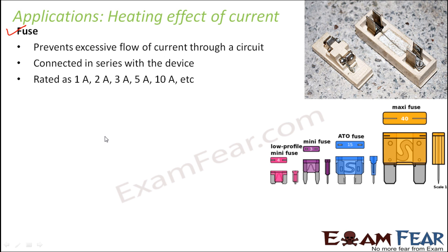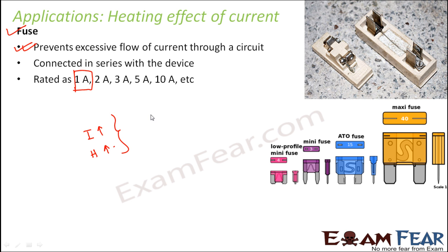How does a fuse prevent excessive flow of current? The fuse is made up of a wire which has a considerably lower melting point. As the amount of current increases, the amount of heat produced also increases as per Joule's law of heating. Since the metal of the fuse has a low melting point, as soon as the heat reaches a certain value it melts, breaking the circuit, which prevents any further flow of current. When a fuse is rated 1 ampere, it allows up to 1 ampere to flow — whenever current exceeds that, it breaks due to overheating and prevents further current flow.